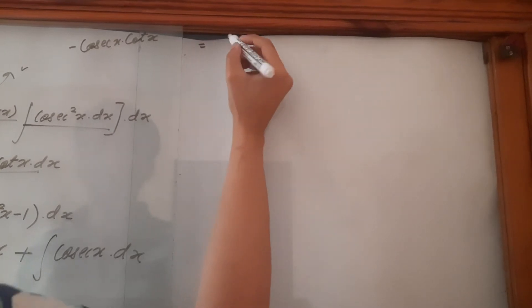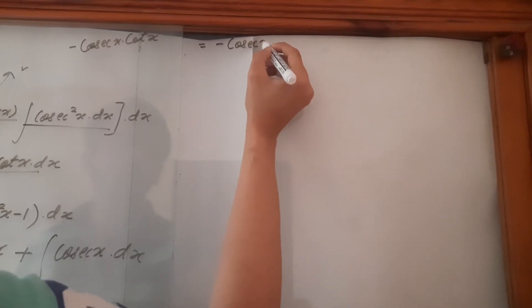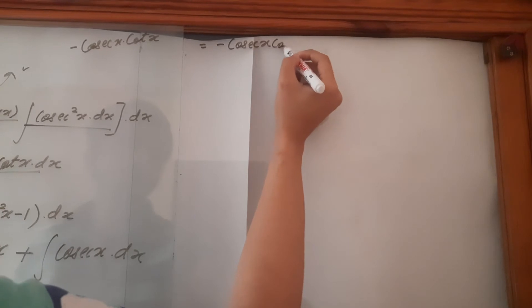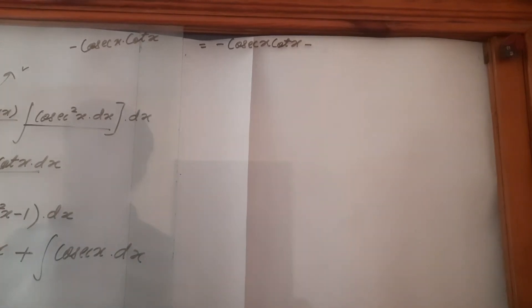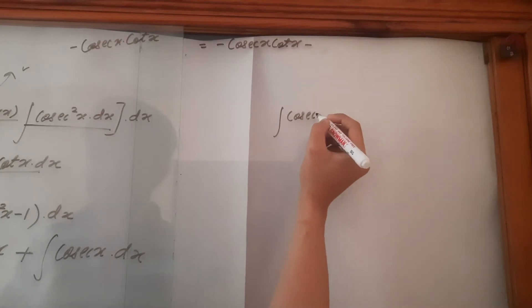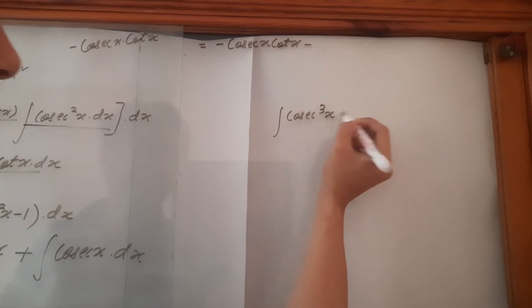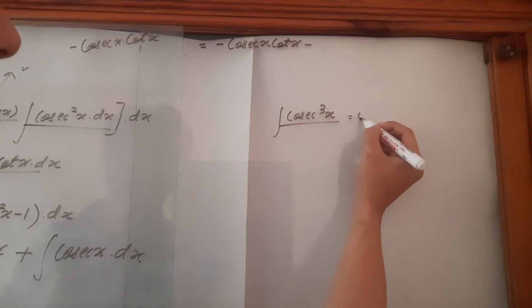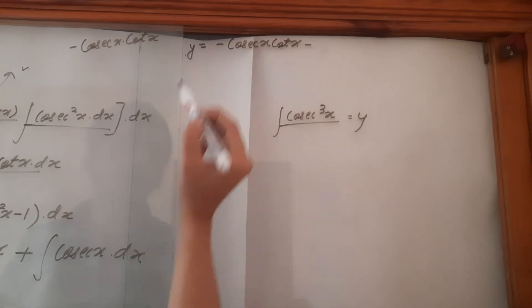So equal to minus cosec x times cot x minus what we have here is cosec cube x. So this is equal to, let's say y. This is the question. So let's suppose this to be y. And let's say we have y over here as well, because this is what we are solving for. This is y.